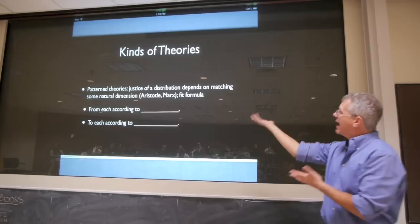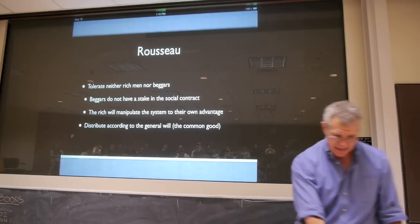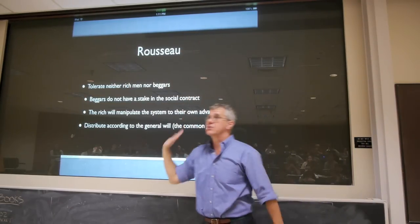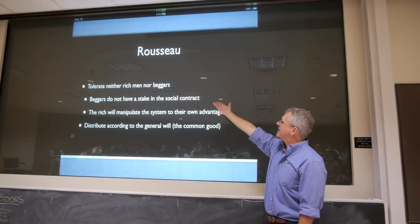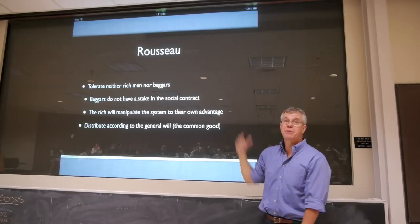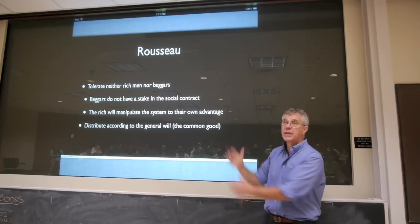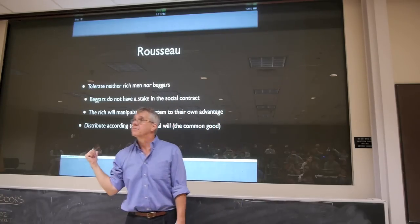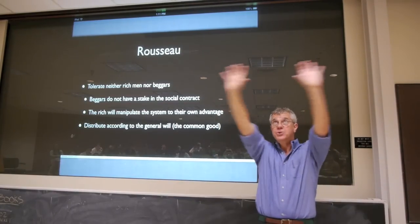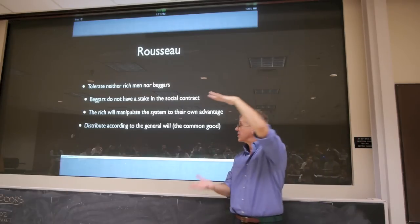A pattern theorist doesn't do that. A pattern theorist says you've got to match something. Let's think about some theories of justice we've talked about during this term. Rousseau says: tolerate neither rich men nor beggars. Why? Beggars don't have a stake in the social contract, and the rich can manipulate the system to their own advantage. So you've got to avoid extremes and limit inequality. What kind of theory is Rousseau presenting there? It's an end result theory — he's concerned that nobody be too wealthy, nobody be too poor. Who are these wealthy people? It doesn't matter. You just look at the overall distribution.